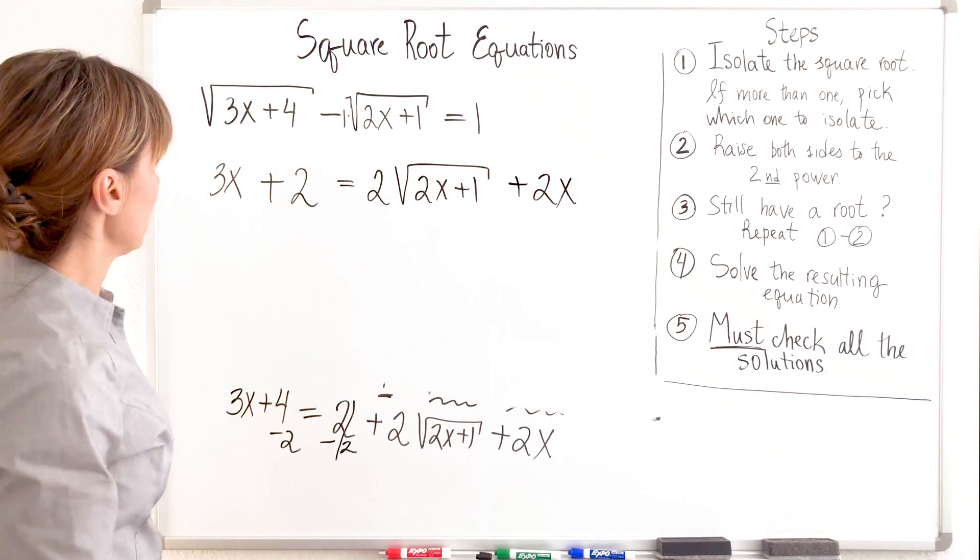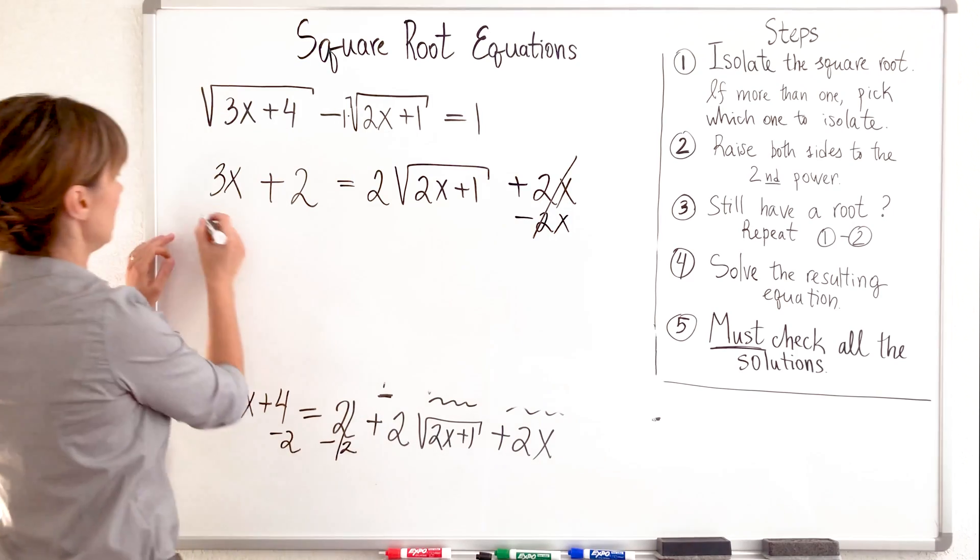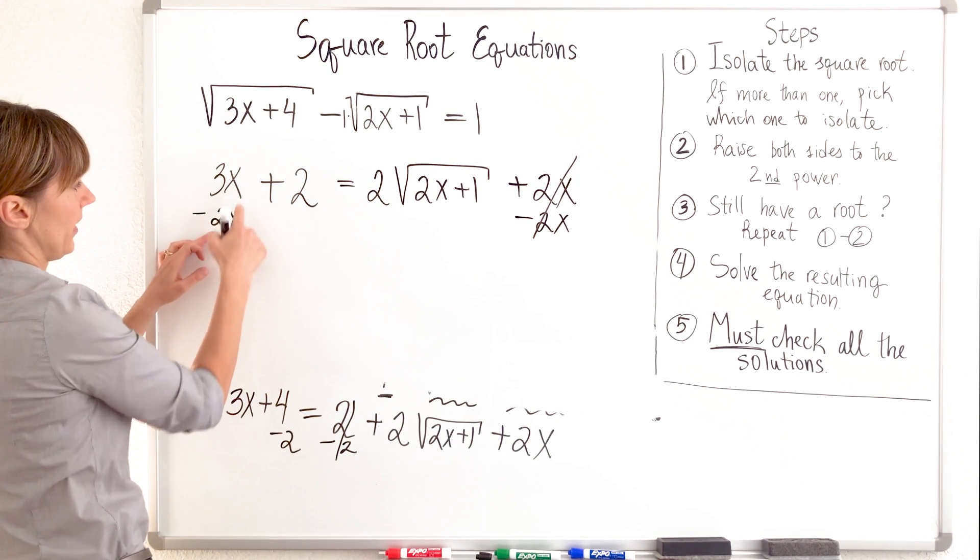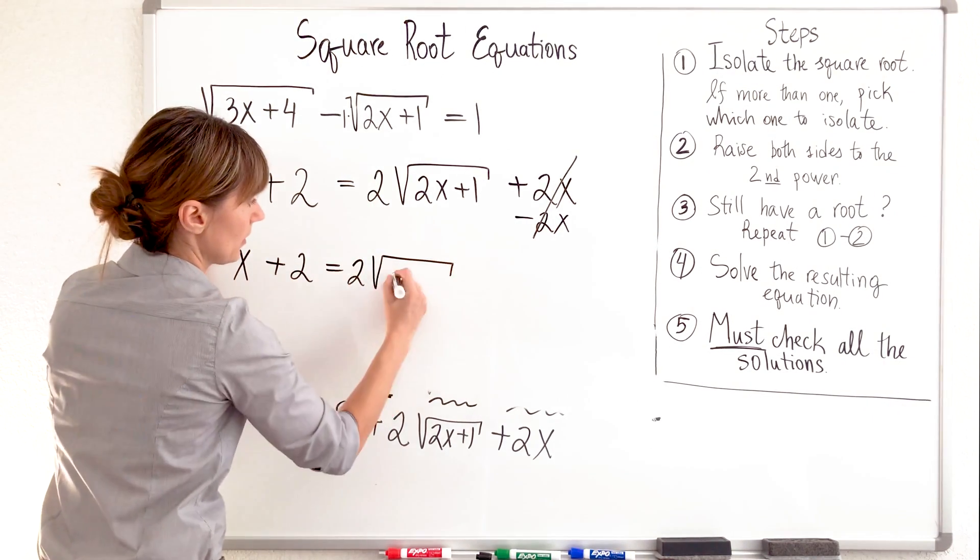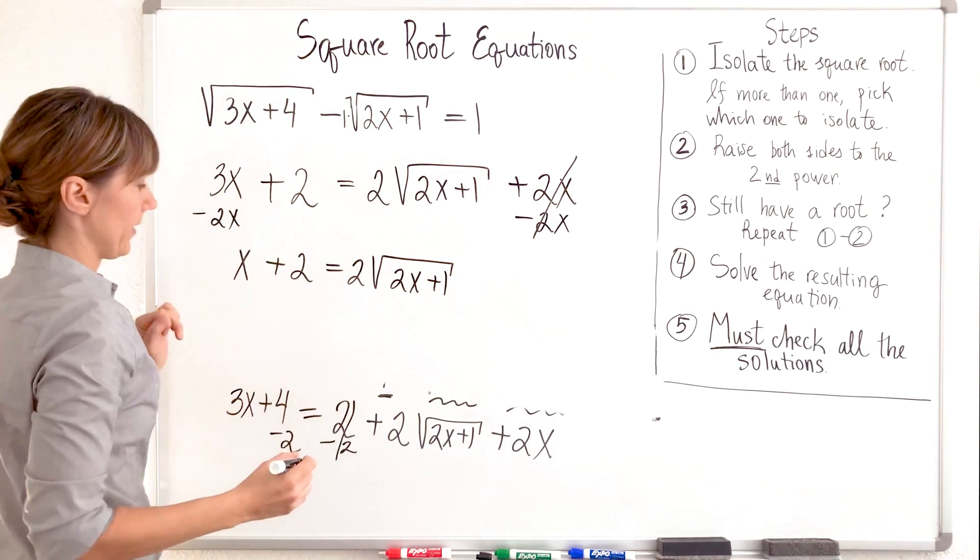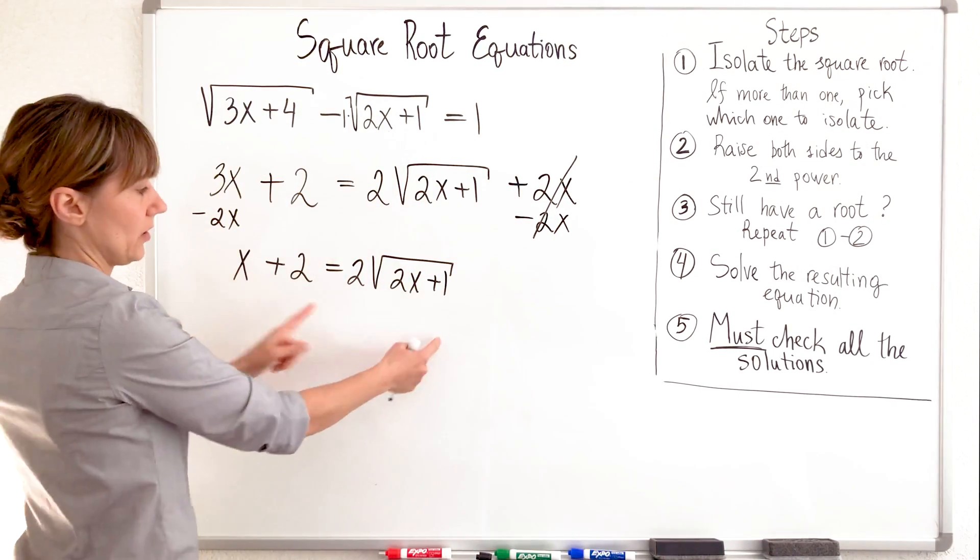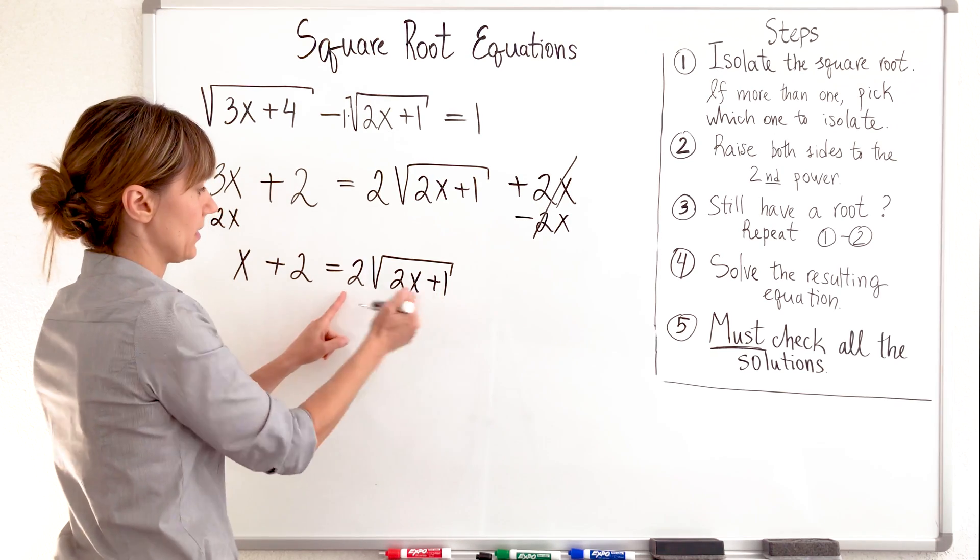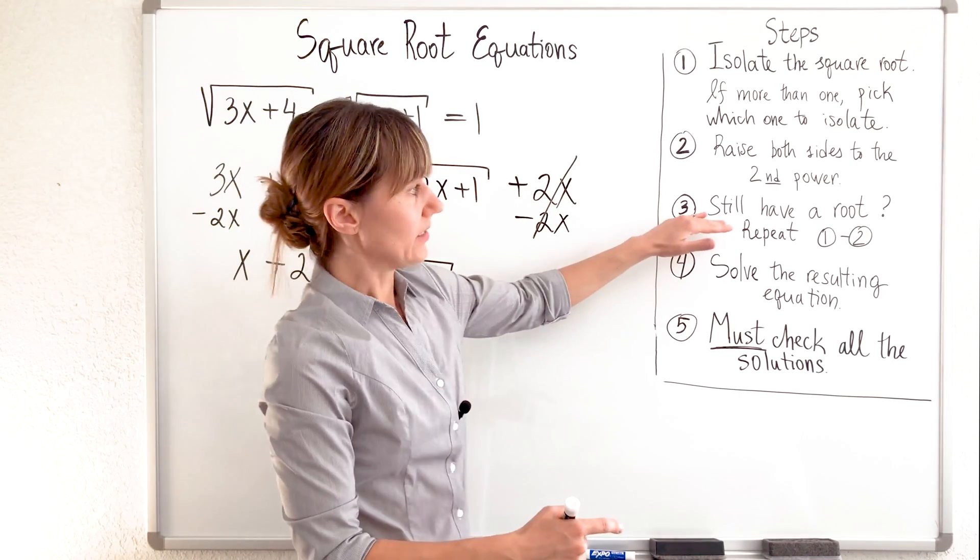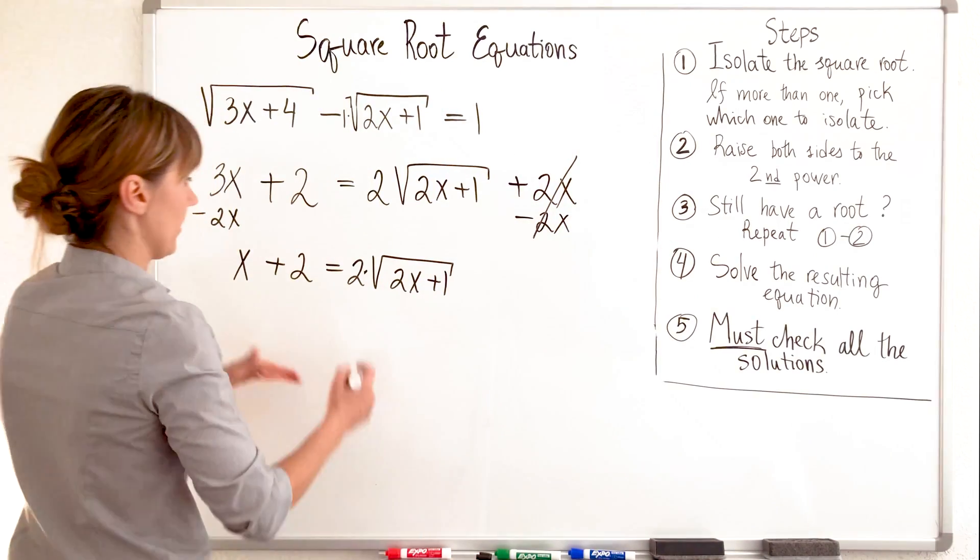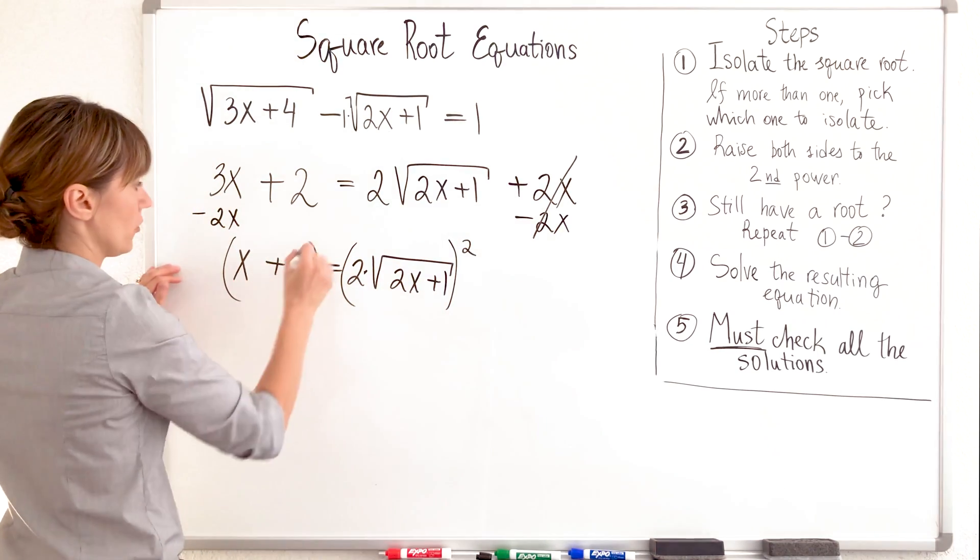What do I do next? I'm subtracting 2x from both sides. This will collapse to 0 minus 2x. So 3x minus 2x is just x plus 2, and I have this 2 times the square root of 2x plus 1. Much nicer. Now let's look at our rules and see what we have. This root is isolated. It's on the right-hand side. This 2 doesn't bother me because it's just 2 times. What I'm going to do? I still have a root. So I'm going to follow the steps. I'm going to start all over again. And my root is already isolated. I'm going to raise both sides to the second power.